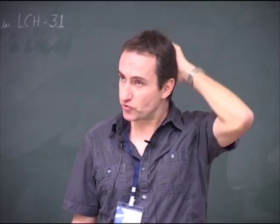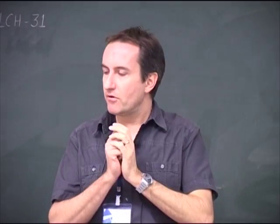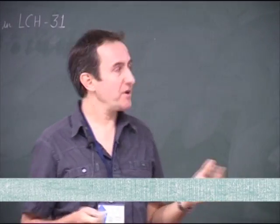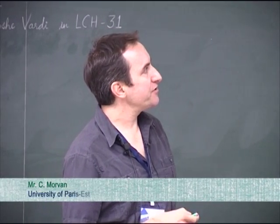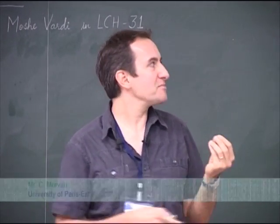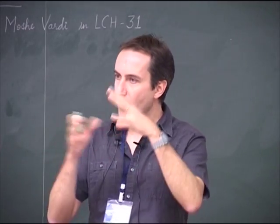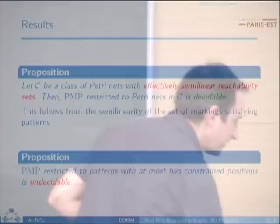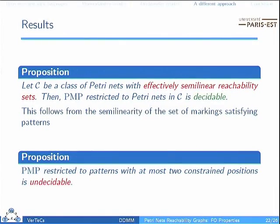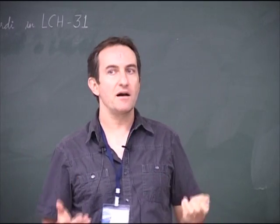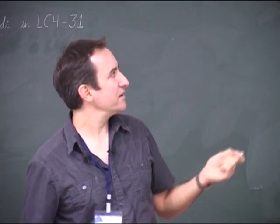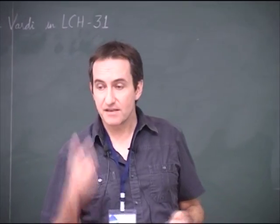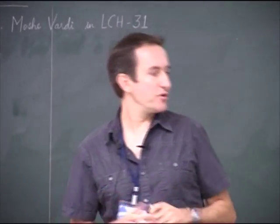By doing this, we are able to identify patterns in this set. What we try to do is address a very simple and geometrical question: given a pattern and a net, does the pattern exist somewhere in the net? This question turns out to be decidable whenever the PetriNet has a semi-linear reachability set, because the set of centers of patterns forms a semi-linear set.